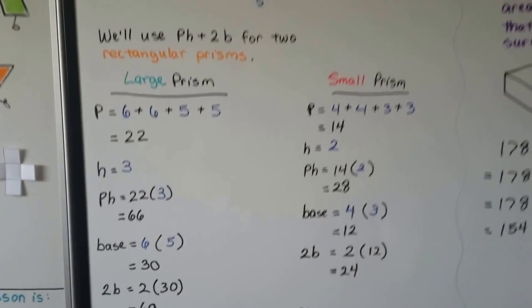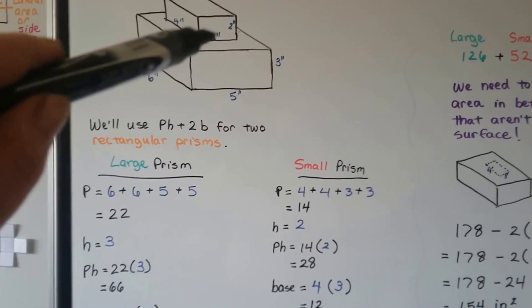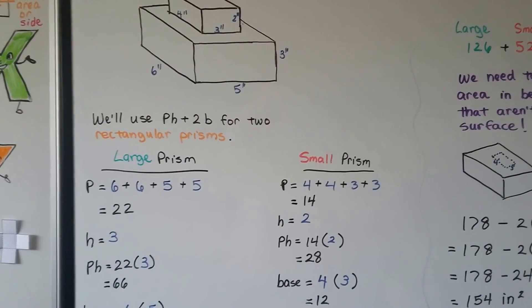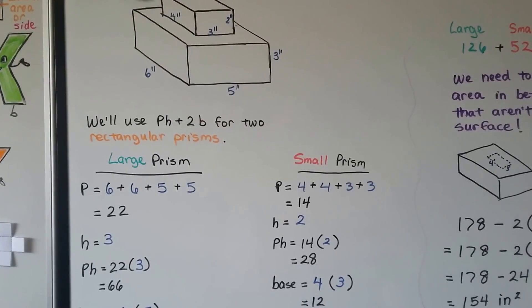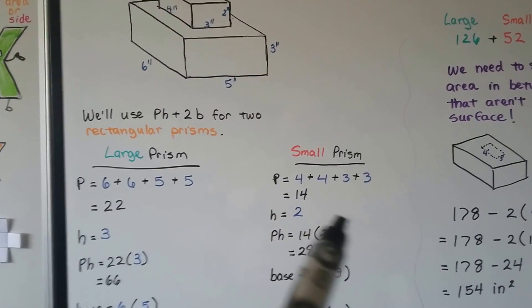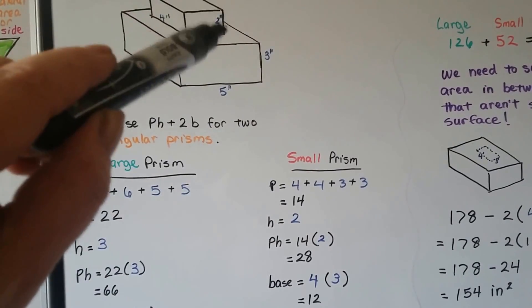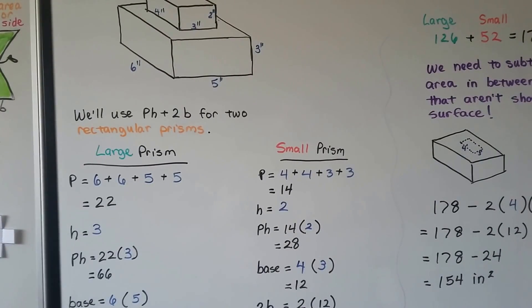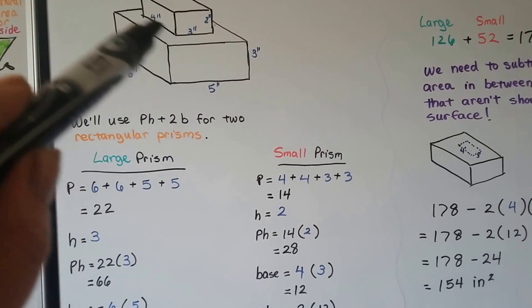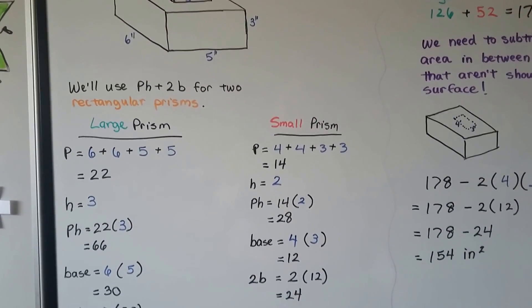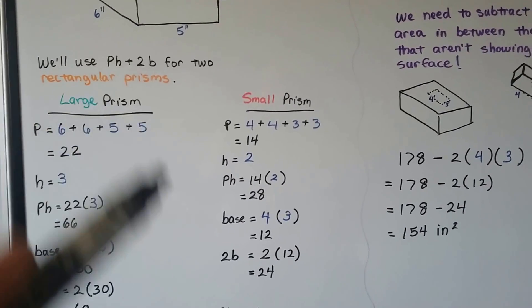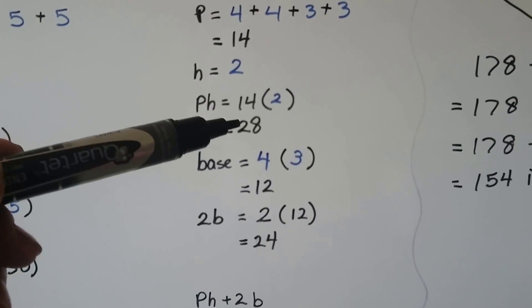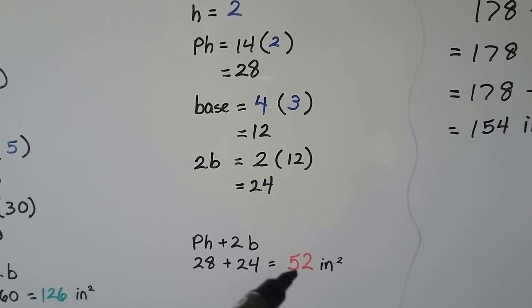For the small prism, we have 4 inches, 3 inches, and a height of 2 inches. The perimeter is 4 plus 4 plus 3 plus 3, which equals 14. Height is 2, so perimeter times height is 14 times 2, which is 28. The base is 4 times 3, which is 12. Two bases is 24. Adding pH plus 2B: 28 plus 24 gives us 52 inches squared.